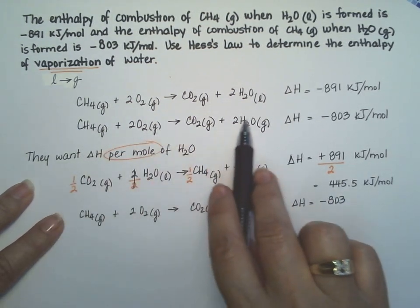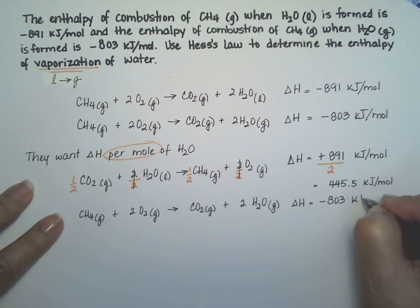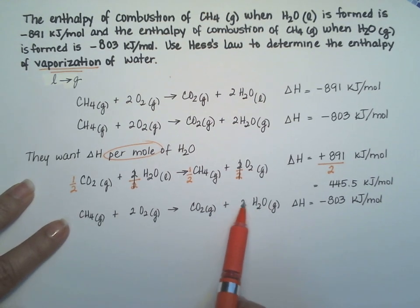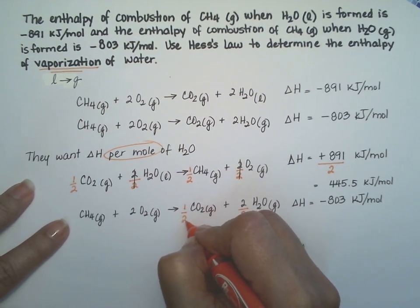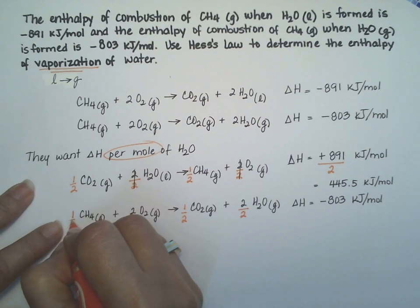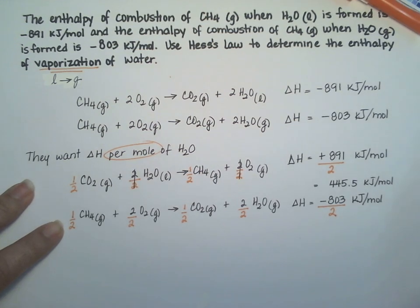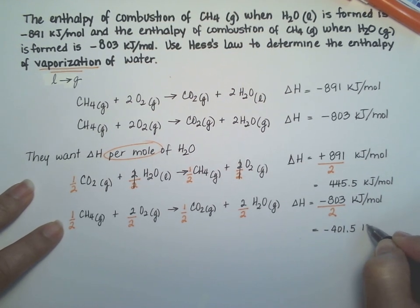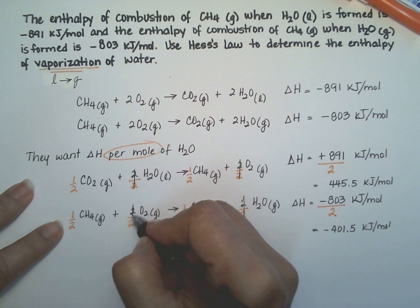The delta H for that reaction was minus 803. I used the equation the way they gave it to us, so I do not change the sign. What I am going to have to do is divide the whole thing by two because again, I don't want two moles of water, I want only one mole of water. So divide everything by two, including the delta H. So this delta H right here is now minus 401.5 kilojoules per mole.